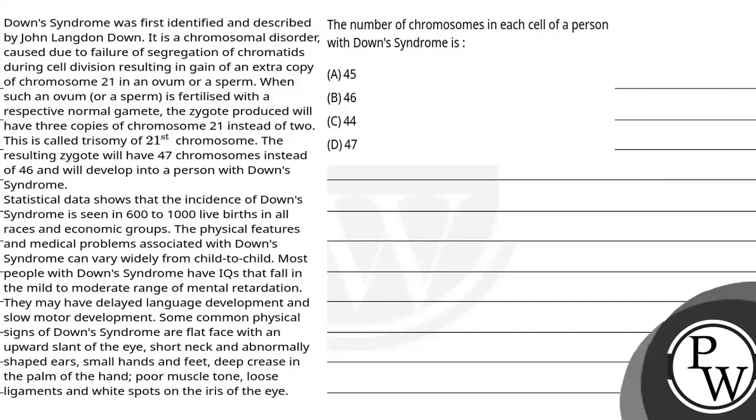Hello Bacho, let's read the question. The question says Down syndrome was first identified and described by John Langdon Down. It is a chromosomal disorder caused due to the failure of segregation of chromatids during cell division, resulting in gain of an extra copy of chromosome number 21 in an ovum or a sperm.